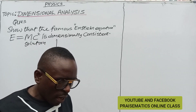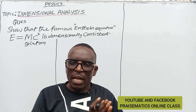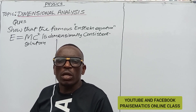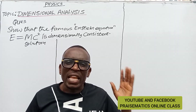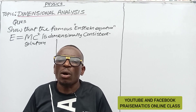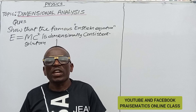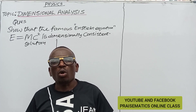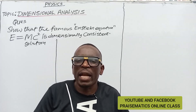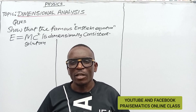Before solving whether this is dimensionally consistent, you need to solve the dimension of the left-hand side, keep your answer, and solve the dimension of the right-hand side and keep your answer. If the dimension of the left-hand side is equal to the dimension of the right-hand side, you can conclude that the equation is dimensionally consistent. But if it is not equal, your conclusion would be that the equation is dimensionally inconsistent.